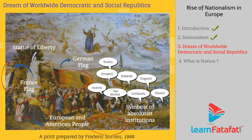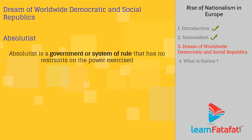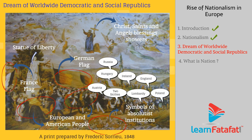Laid in the foreground are the remains of symbols of Absolutist institutions and rules. Absolutist refers to a government or system of rule that has no restraints on the power exercised. Soria also shows that from heaven, Christ, saints, and angels are showering blessings upon the scene to symbolize fraternity among the nations of the world.